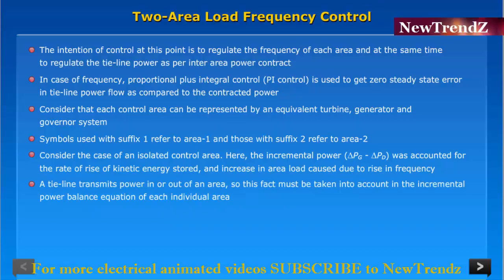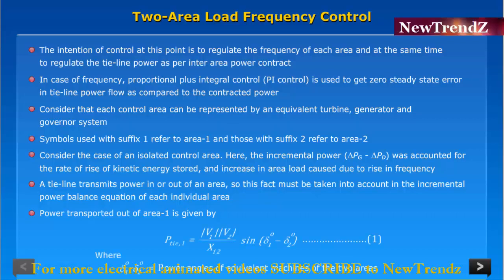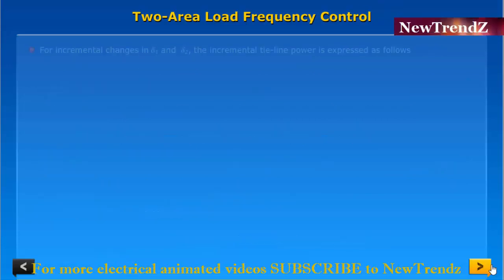A tie line transmits power in or out of an area, so this fact must be taken into account in the incremental power balance equation of each individual area. Power transported out of area 1 is given by where Δ1,0, Δ2,0 is equal to power angles of equivalent machines of the two areas. For incremental changes in Δ1 and Δ2...